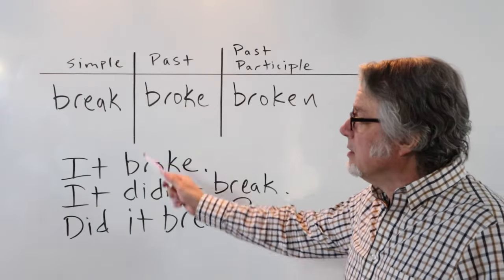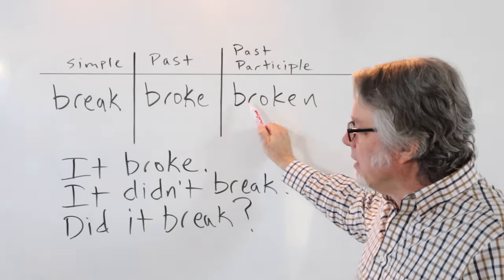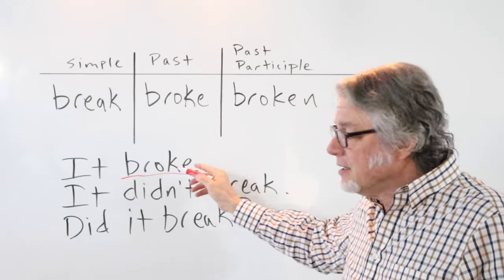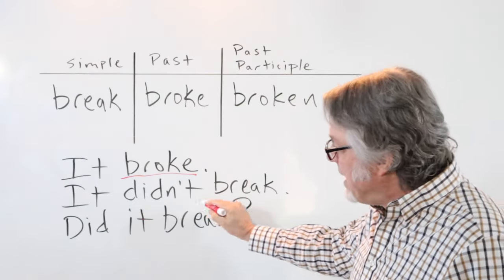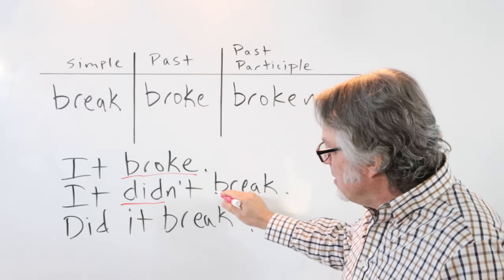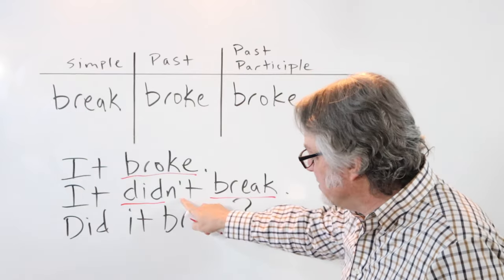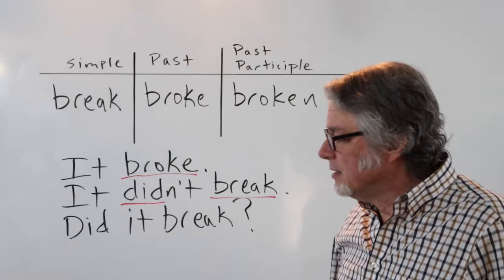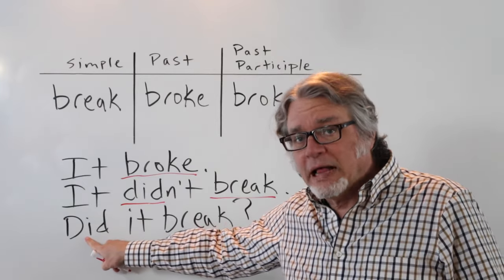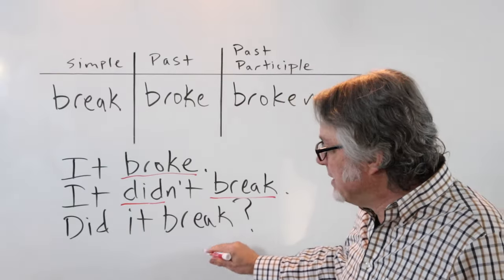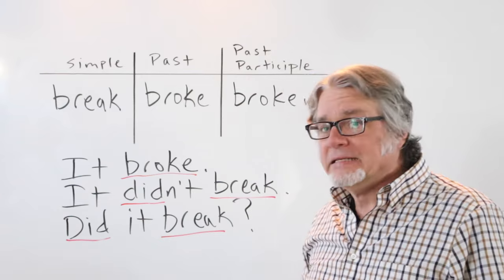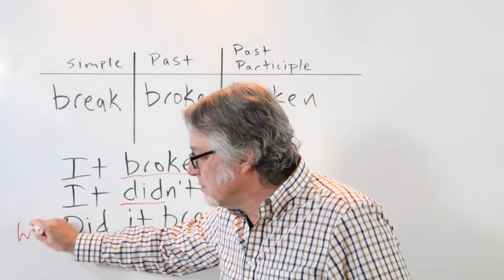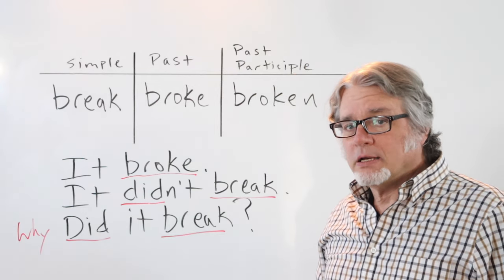Here's the verb 'break': break, broke, broken. It broke — this is the past tense. It didn't break — this is also the past tense; it's negative. The helping verb goes before the simple form. Did it break? In this question, the helping verb goes before the subject and then the main verb is in the simple form: Did it break? You could also make a question with a question word: Why did it break?